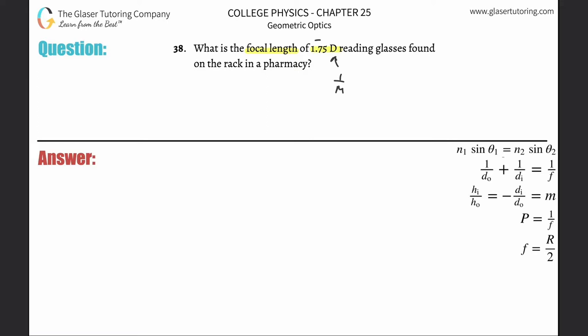So the relationship then between power and focal length is a reciprocal one. In other words, power is equal to 1 divided by the focal length. So if I wanted to find the focal length, just simply cross-multiply these terms. And therefore the focal length will be equal to 1 divided by the power in diopters.